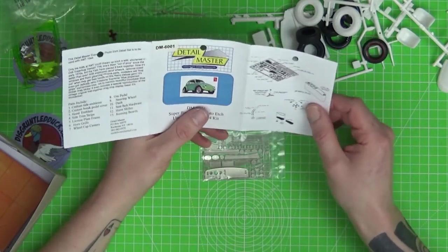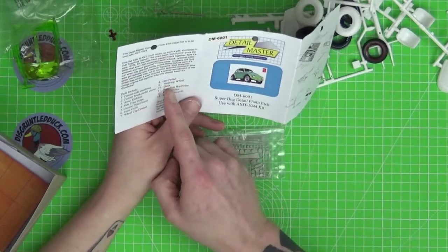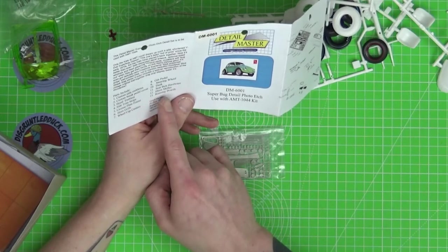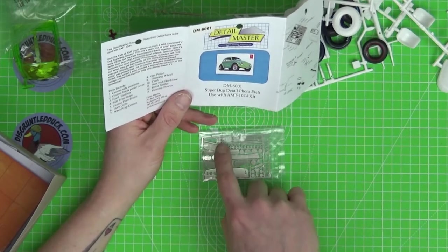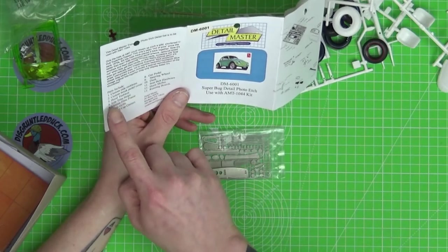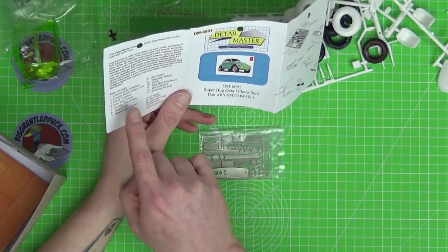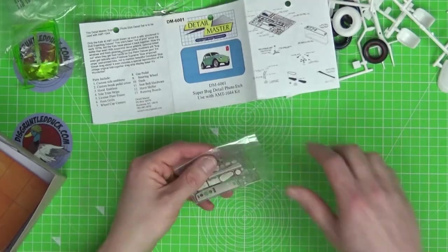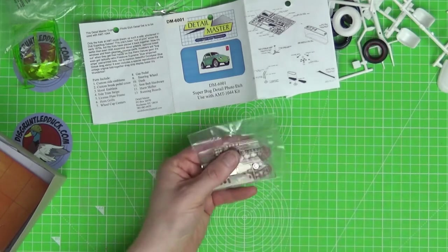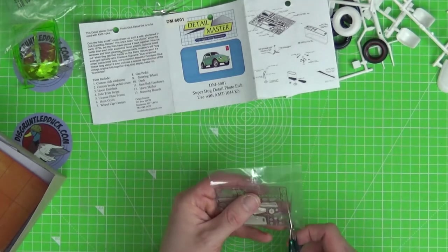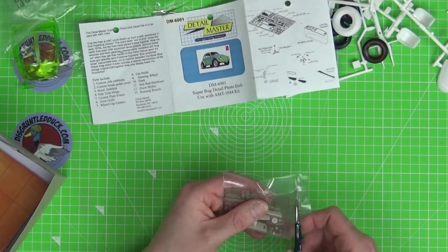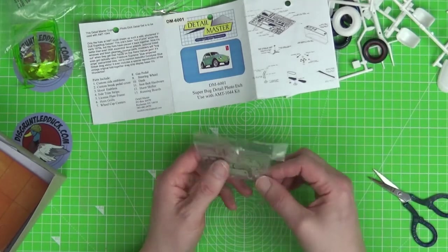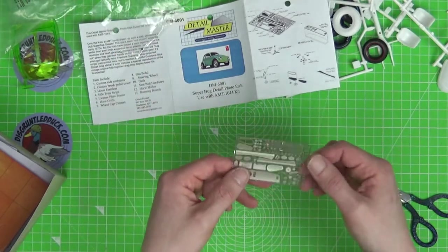The instructions for this - okay so it tells you the parts here, what they are. So gas pedal, steering wheel, dash, seat belt hardware, shifter, running boards - that's what they are there - side emblems, brake pedal, covers, hood emblems, side trim strips which are these little guys here. Let me - what I want to do, let's open these and get this a bit closer to the camera because there's quite a little bit of fine detail.